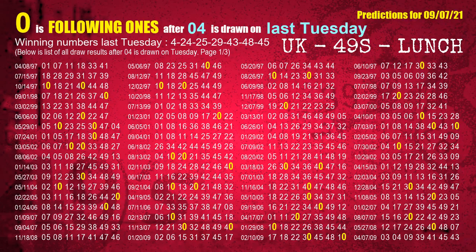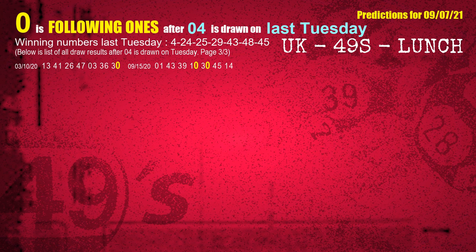After calculating following ones with today's result, we will find out following ones through the result of the same day last week. The first winning number last Tuesday is 04. We list all draw results which are one week after a Tuesday draw with 04 as a winning number. The most frequently following units digit is 0 when 04 is the winning number on last Tuesday. We also highlight the units digit 0 in yellow for you.